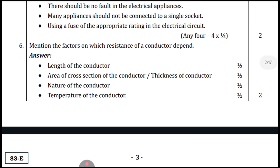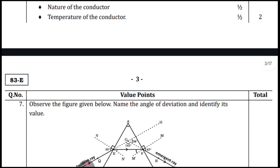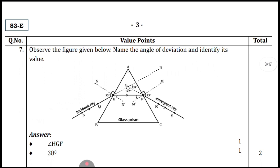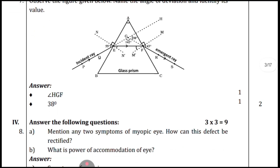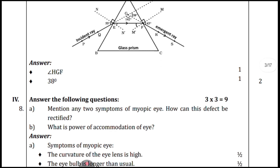Question six: mention the factors on which resistance of a conductor depends. Coming to the diagram question: observe the figure given below, name the angle of deviation and identify its value. The angle of deviation is angle HGF and its value is 38 degrees. Mentioning the angle earns one mark and writing the degree value earns one mark.